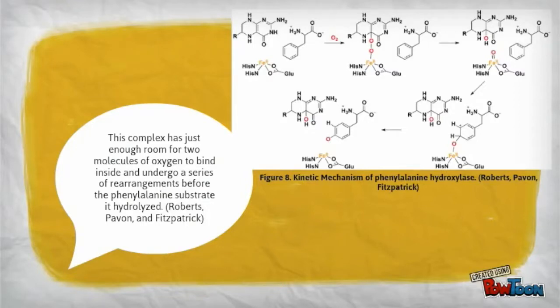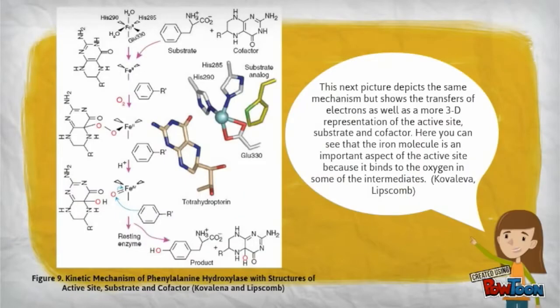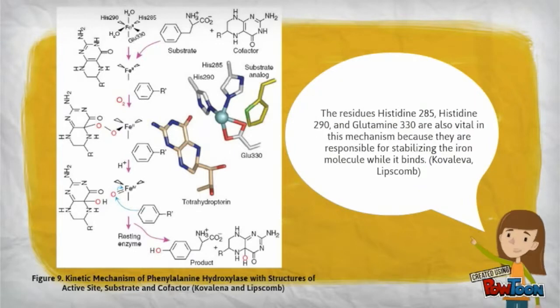This next picture depicts the same mechanism, but shows the transfer of electrons as well as a more 3D representation of the active site, substrate, and cofactor. Here you can see that the iron molecule is an important aspect of the active site because it binds to the oxygen in some of the intermediates. The residues histidine-285, histidine-290, and glutamine-330 are also vital in this mechanism because they are responsible for stabilizing the iron molecule while it binds.